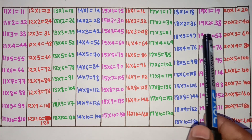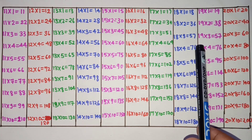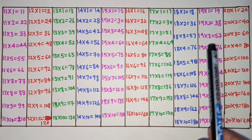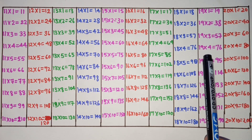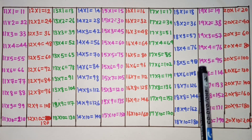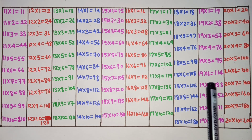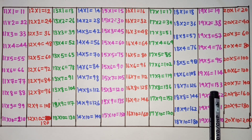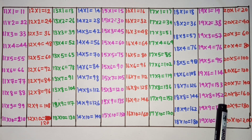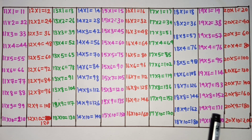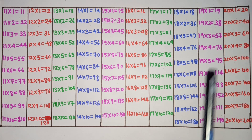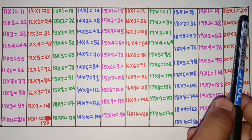19 ones are 19, 19 twos are 38, 19 threes are 57, 19 fours are 76, 19 fives are 95, 19 sixes are 114, 19 sevens are 133, 19 eights are 152, 19 nines are 171, 19 tens are 190.